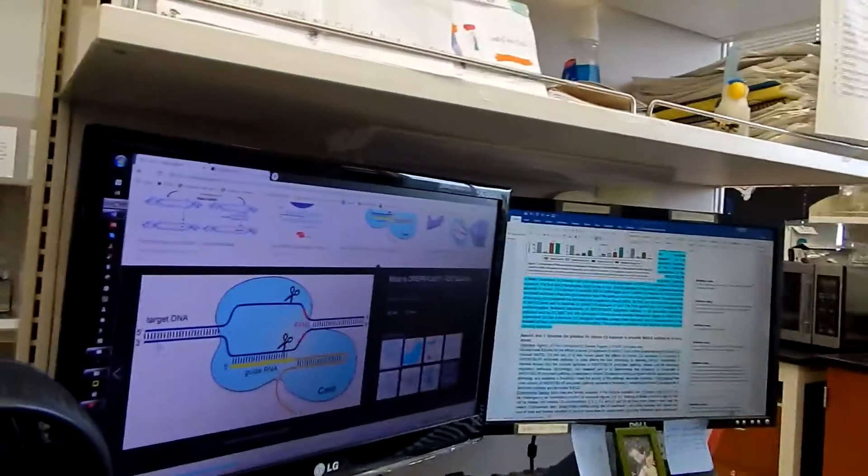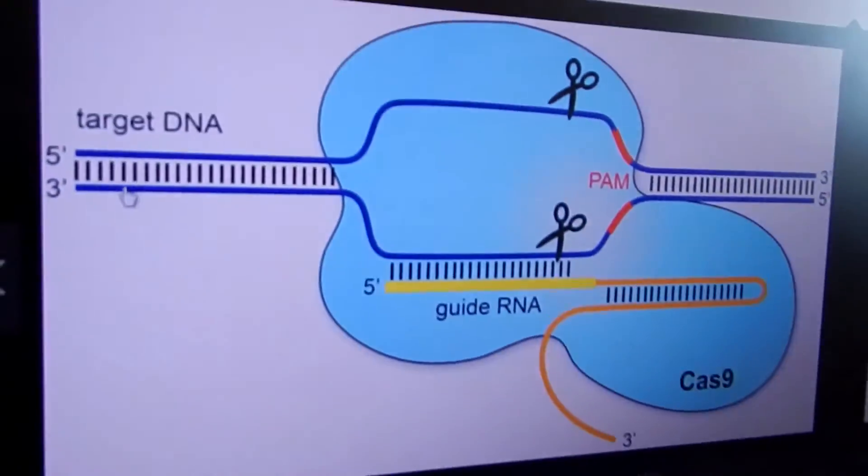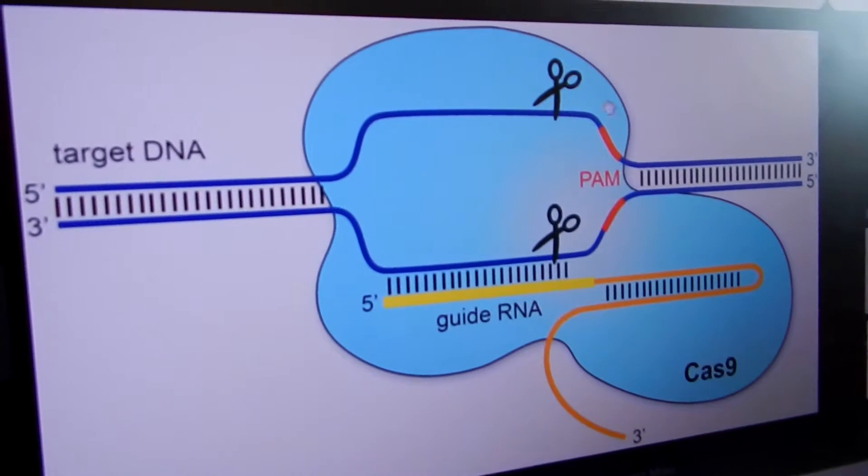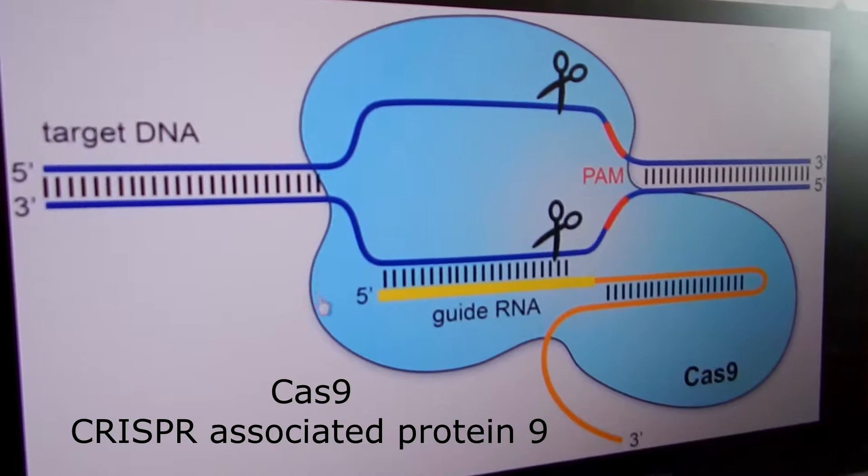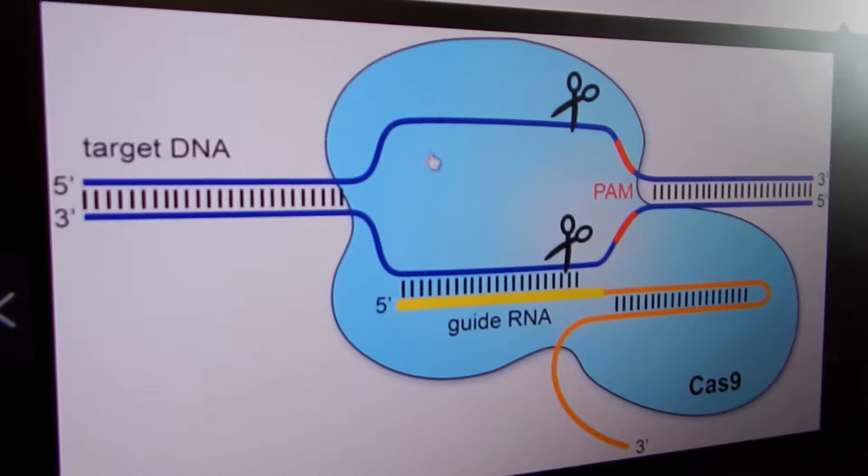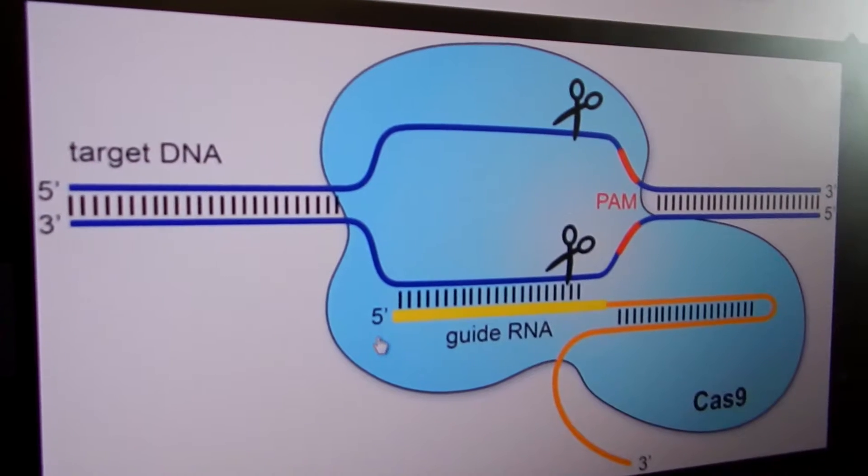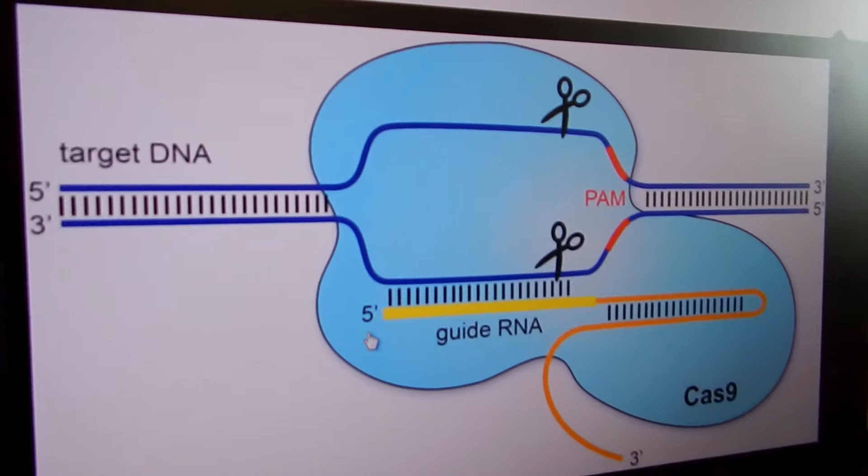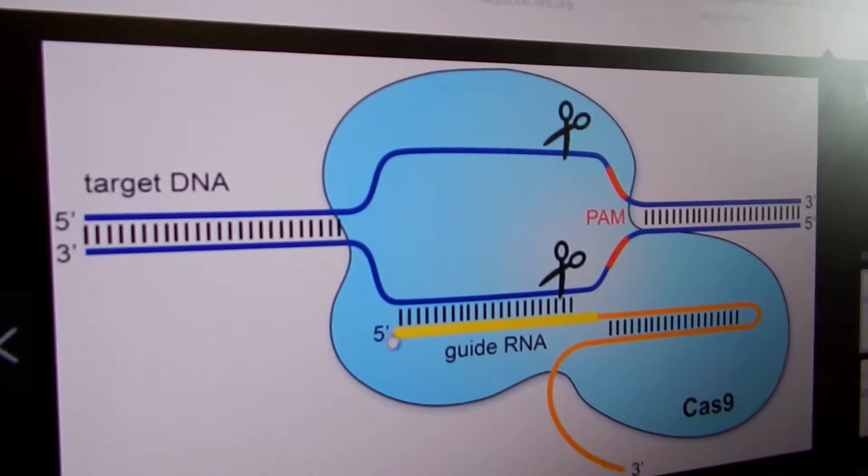Basically, think about we have the double-strand DNA here. Let's say this is human DNA. Part of the Cas9 system is this complex from bacteria or other organisms. This is the host defense mechanism. But we can use this one to modify the human genes, whatever you're interested in.